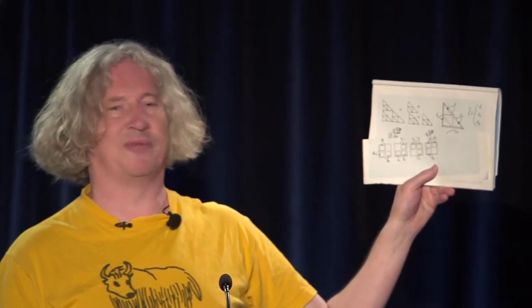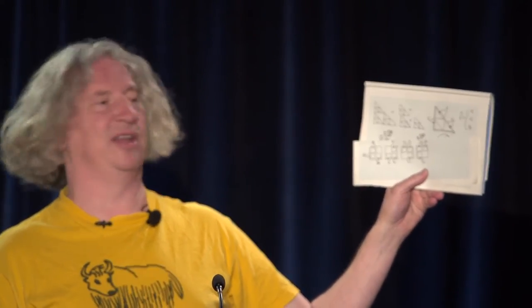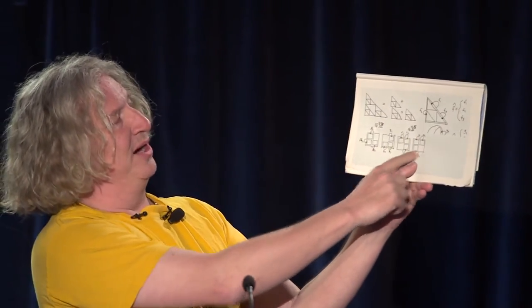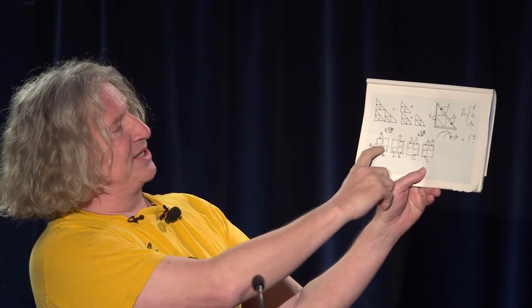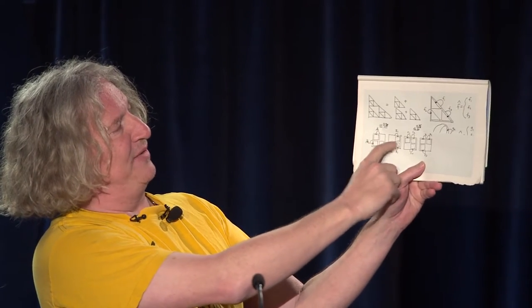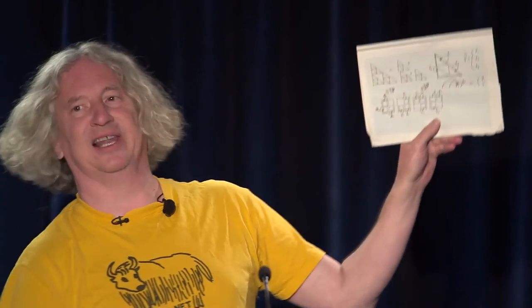Another set, here's four iterated function systems, because when we start doing super fractals we're using more than one iterated function system at a time. Here's the four that lead me to the super fractal I was just showing you. It's the maps that leave out one corner, leave out another corner, leave out another corner, and leave out another corner.